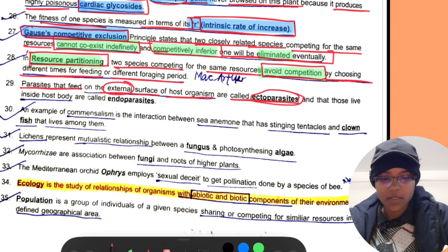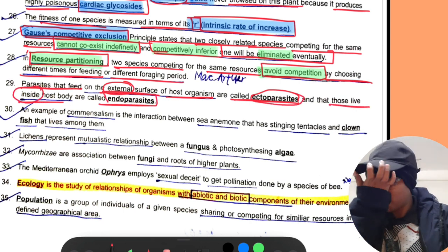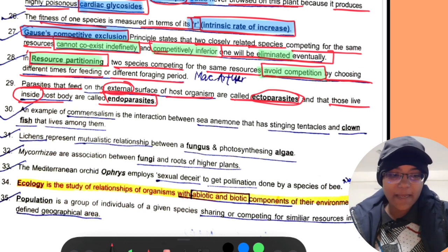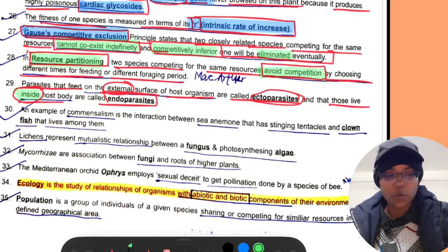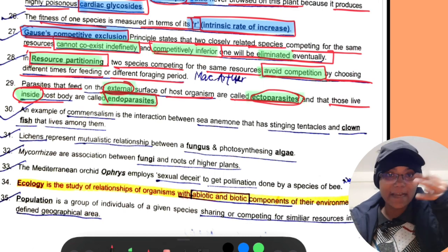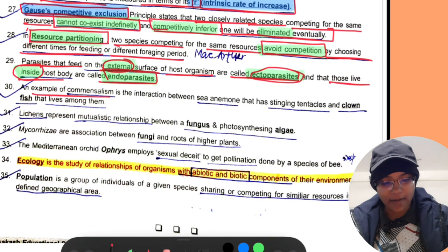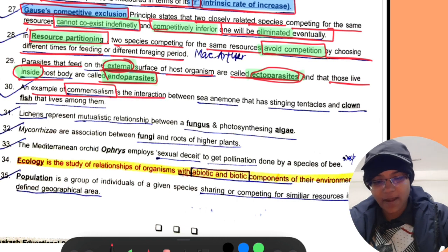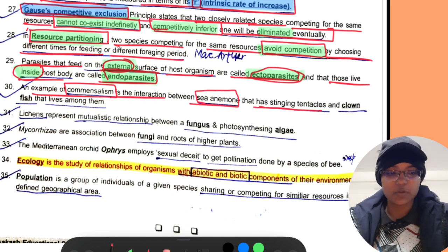Parasites that feed on the external surface of the host organism are called ectoparasites and those who live inside are called endoparasites.